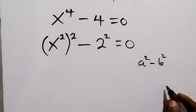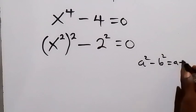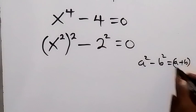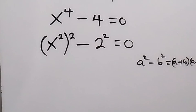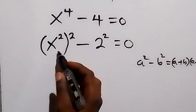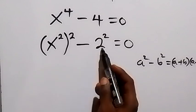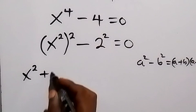this is the same thing as a plus b into bracket a minus b. So when we use this pattern here, then we have a represented as x squared, then b represented as 2. So this becomes x squared plus 2